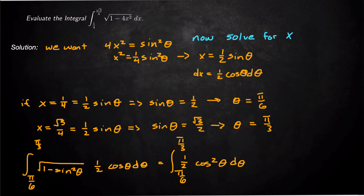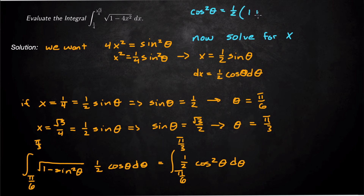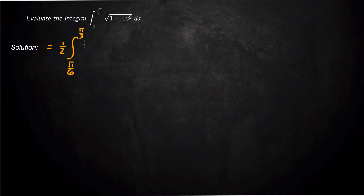Now we have to turn cos²θ into a form we can integrate using the power reduction formula — also called the double angle or half angle formula. The power reduction formula is cos²θ = ½(1 + cos2θ). So we substitute that in: the integral from π/6 to π/3 of ½ · ½(1 + cos2θ) dθ.